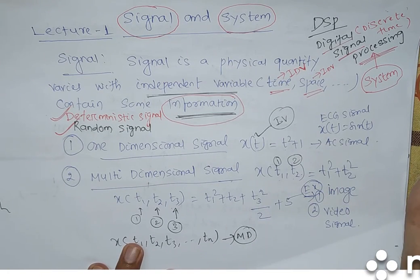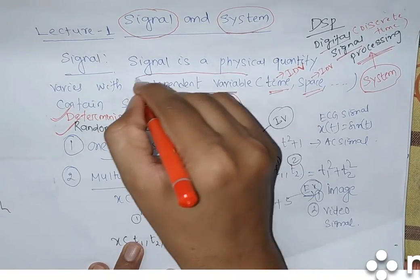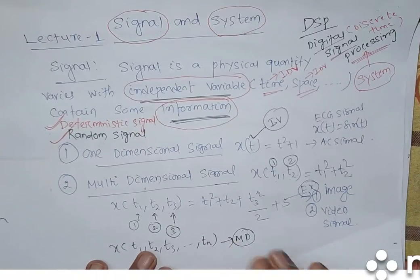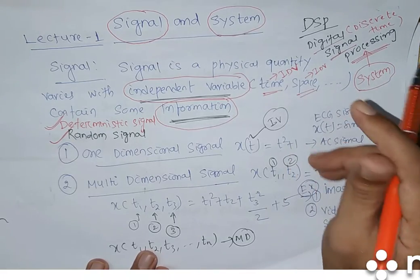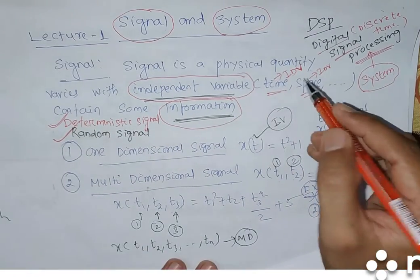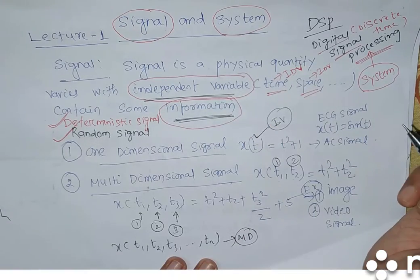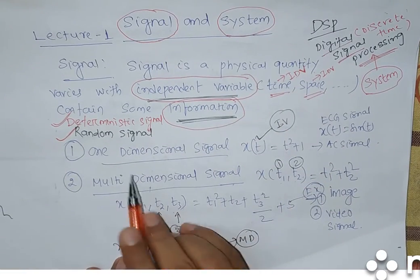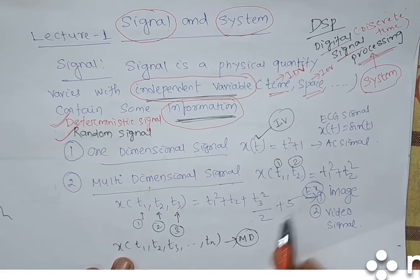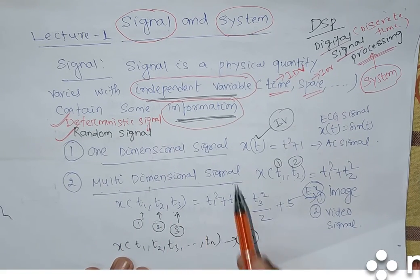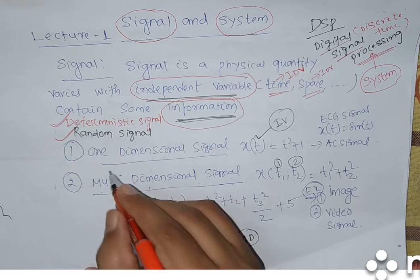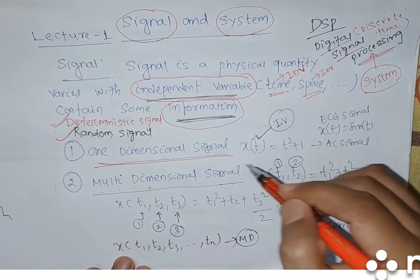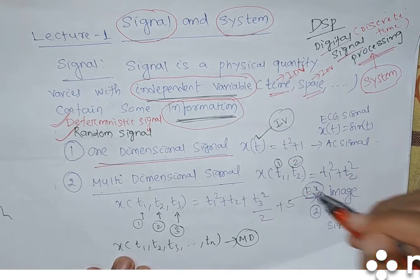Based on independent variable, because here one term we use — independent variable, that is time or space — generally in our subject we will deal with time only, not space. Come to independent variable: based on independent variable, we can categorize signal into two parts. One is one-dimensional signal, another is multi-dimensional signal.